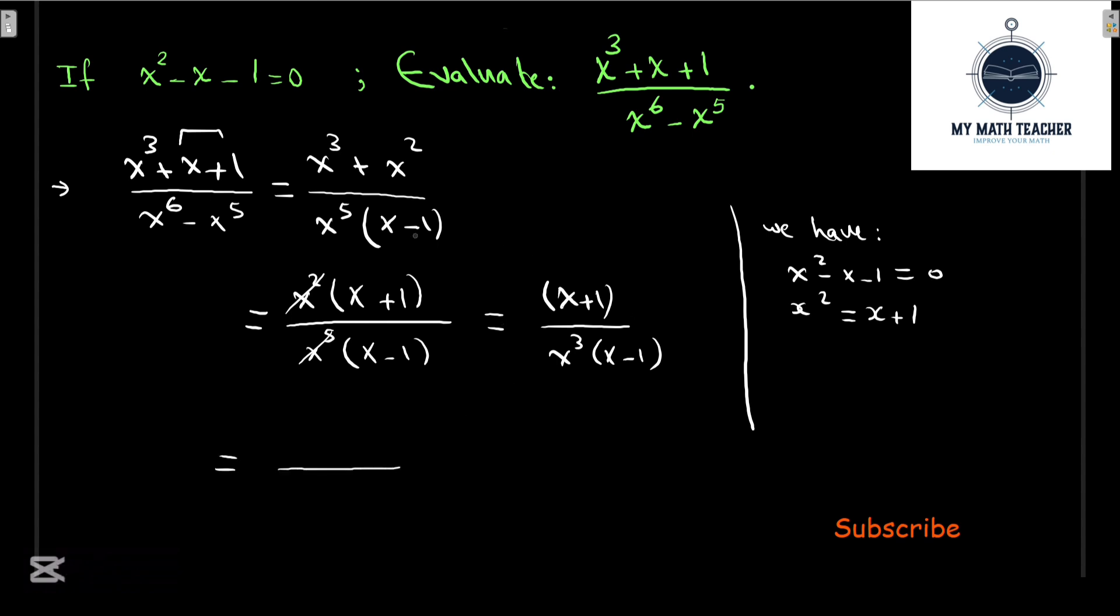Again, x + 1 equals x², so let's replace it back to get x²/(x³(x - 1)). Simplifying x² divided by x³ gives us 1/(x(x - 1)).